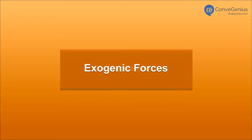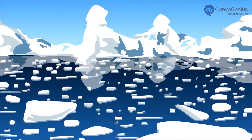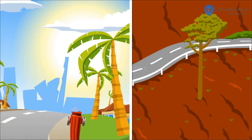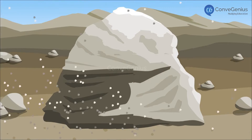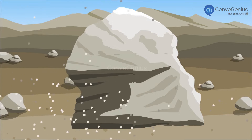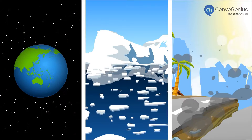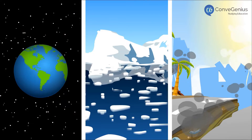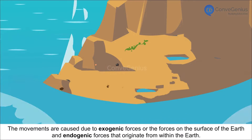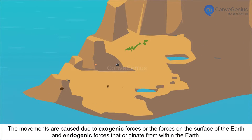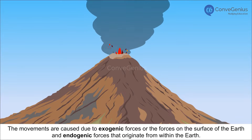Exogenic Forces. Our earth is constantly changing, with its landscape too changing. The changes that happen quickly are visible to us immediately, while the ones that happen slowly change the landscape over time. These changes or evolution of landforms are brought about by several earth movements. The movements are caused due to exogenic forces, or the forces on the surface of the earth, and endogenic forces that originate from within the earth.